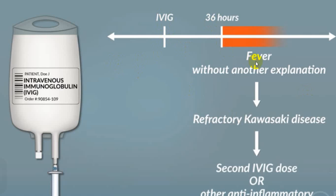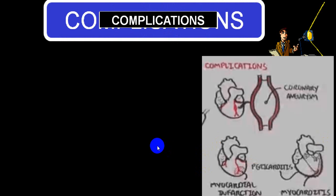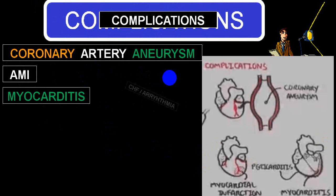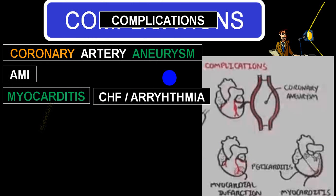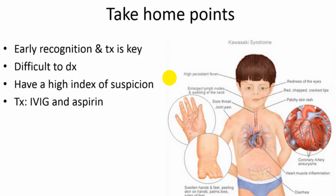Even after 36 hours, if fever persists without any other explanation or there is refractory Kawasaki, a second dose of IV immunoglobulin should be given, or other anti-inflammatory agents apart from aspirin should be added. The most common and dangerous complication is coronary artery aneurysm, which can lead to acute MI, myocarditis, congestive heart failure, cardiac arrhythmias, pericarditis, pericardial effusion, and death.